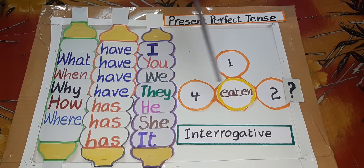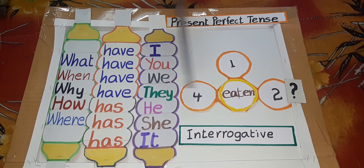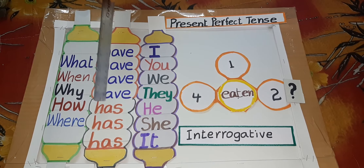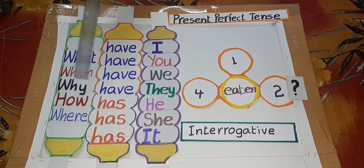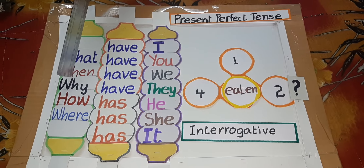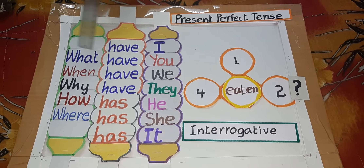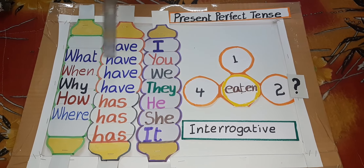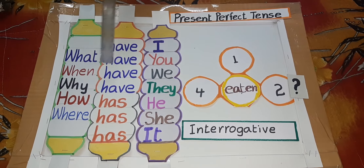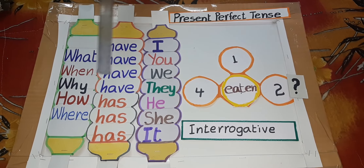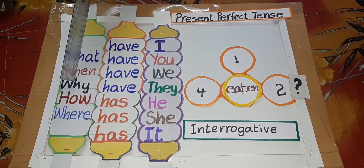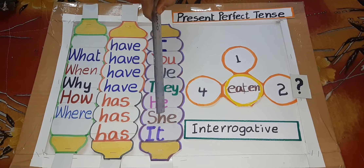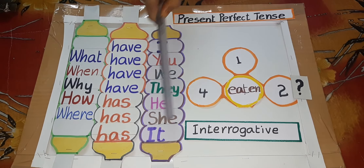When have you eaten? When have we eaten? When have they eaten? When has he eaten? When has she eaten? When has it eaten? Why have I eaten? Why have you eaten? Why have we eaten? Why have they eaten? Why has he eaten? Why has she eaten? Why has it eaten?